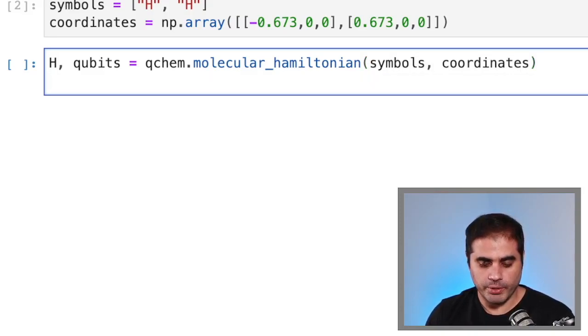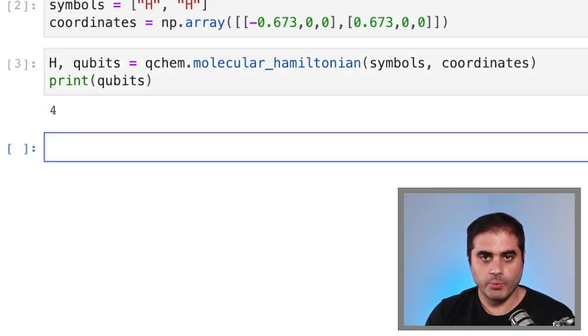Then, for example, we can print qubits. And we will see that we need four qubits to model an H2 molecule.